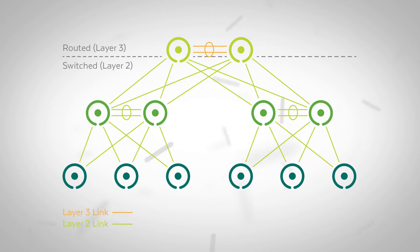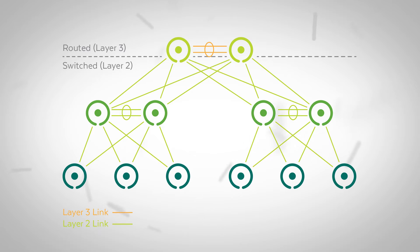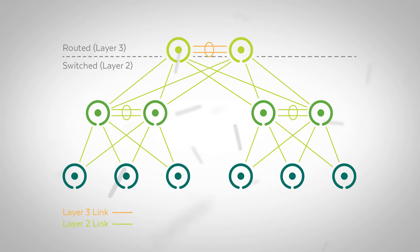Back then, logical designs leveraged Layer 2 to switch first and route only when you had to. The perceived benefit of this design is simplicity and ease of deployment in ongoing administration. Let's consider a typical core, distribution, and access deployment with two core switches aggregating multiple distribution switches that then aggregate multiple access switches. This is a standard hierarchical physical design.